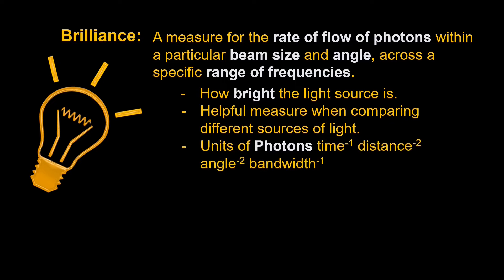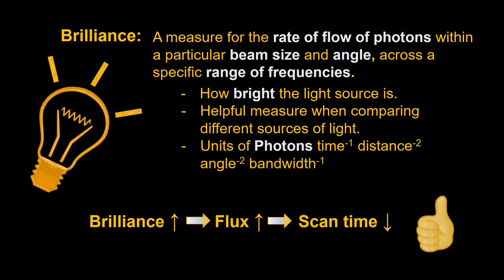And the units of brilliance are in photons per time, per distance squared, per angle squared, per bandwidth. In general terms, high brilliance means that we will have high flux of the X-rays which means we can get things such as lower scan time and better resolution. And these are all good things, so higher brilliance means a better X-ray source in this case.